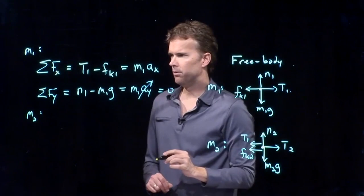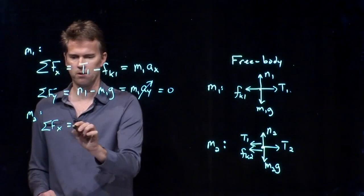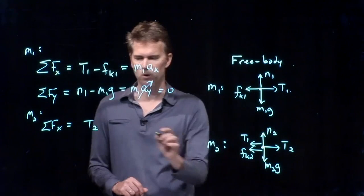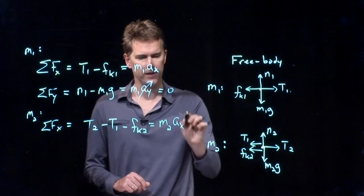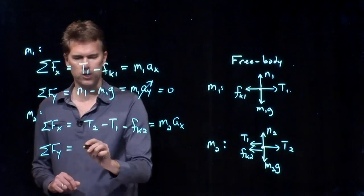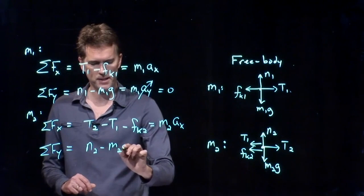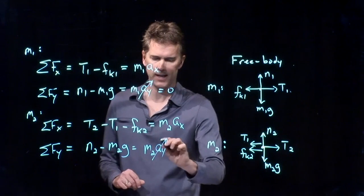What about M2? For M2, we're going to have the following. Sum of the forces in the x direction. T2 to the right, T1 to the left, FK2 to the left. And that's equal to the mass times the acceleration in the x direction. And finally, we have the sum of the forces in the y direction. And for that, we have N2 going up, M2G going down. That's equal to the mass times the acceleration in the y direction, but again, that's zero.